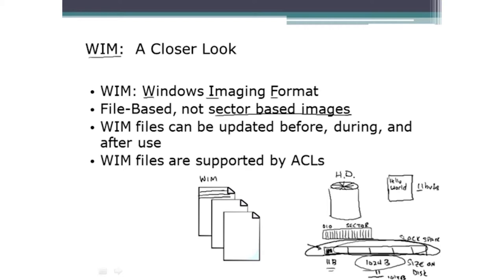This makes WIM a much more lightweight, smaller image. Because it is file-based, you can use ImageX to open it up as a file. Since it's just a file, you don't have to worry about altering the cluster integrity of a disk. If you make the file bigger or smaller, it doesn't matter — it's just a file. Eventually these files get deployed to the new target hard drive. That's what ImageX can do: mount and then update or edit these files before deploying them.